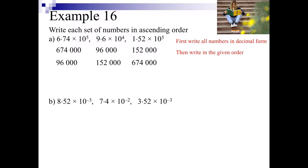What we have to remember to do though is to change that back into the scientific notation. So 96,000 is 9.6 times 10 to the power of 4, and then we get 1.52 times 10 to the power of 5 for 152,000, and 6.74 times 10 to the power of 5 for 674,000.